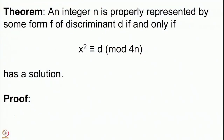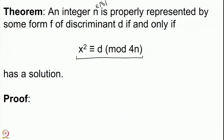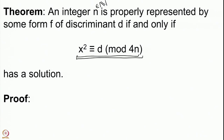The statement is: an integer n is properly represented by some form f of discriminant d if and only if x² ≡ d mod 4n has a solution. This condition says that d is a square modulo 4n, something we understand well by now. We have understood the theory of congruences, and we know how to compute squares modulo a given integer using the Chinese remainder theorem and quadratic reciprocity laws.